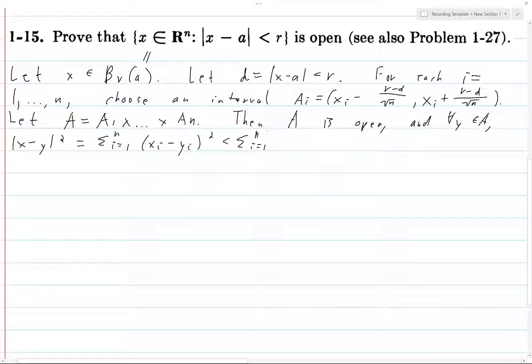The distance from y to x, since y is in the interval A_i for each i, can't be more than (r-d)/√n. So what we get is ((r-d)/√n)², which is (r-d)²/n. But we're summing up this term n times, so this is just (r-d)².